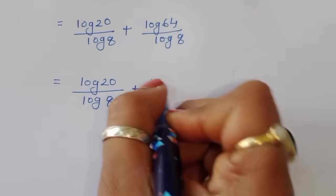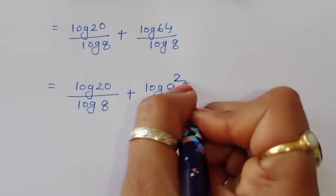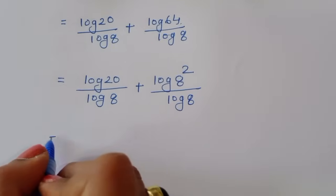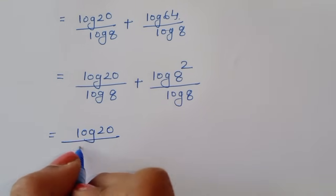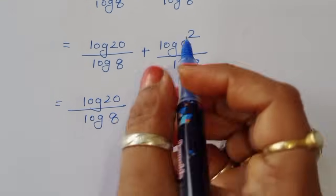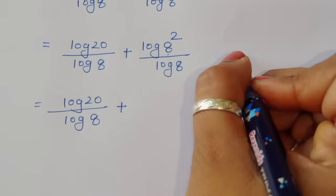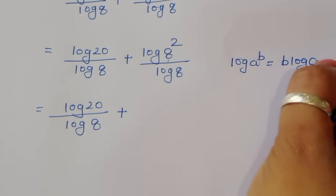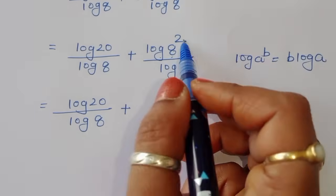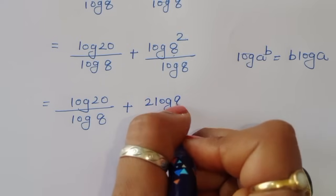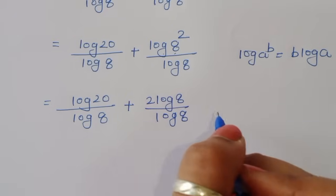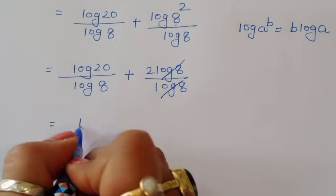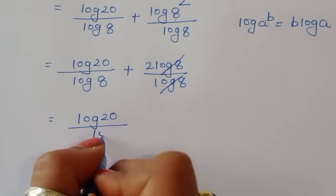This equals log of 20 divided by log of 8, plus log of 64 divided by log of 8. Now 64 is 8 squared, so log of 8 squared divided by log of 8. Using the formula log of a power b equals b log of a, this becomes 2 log of 8 divided by log of 8, which cancels to give 2.